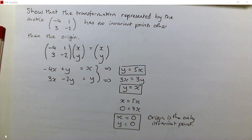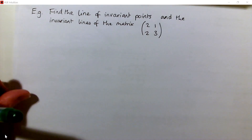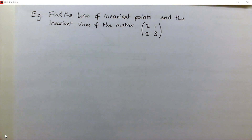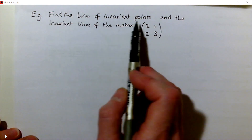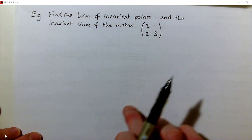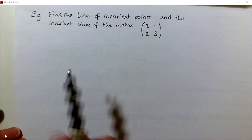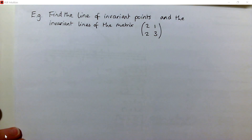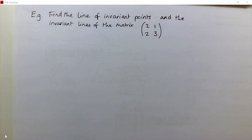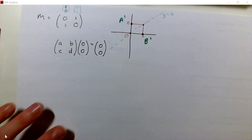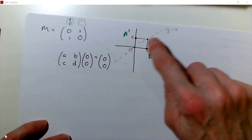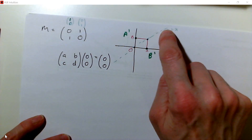Let's have a go at another question — this one covers all the bases, and the hardest part is finding general invariant lines. A line of invariant points is a line where every point stays where it is — it transforms back to itself. But an invariant line is a line that transforms onto itself, though the points within it don't have to stay still. Going back to our reflection example: y equals x is a line of invariant points, since every point on it stays where it is.